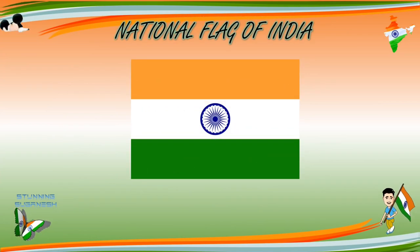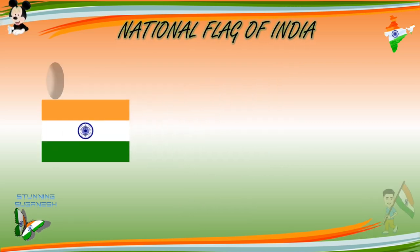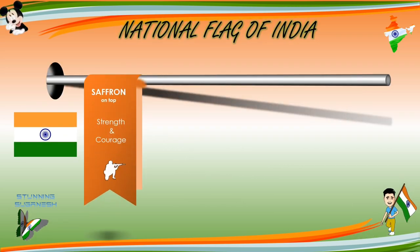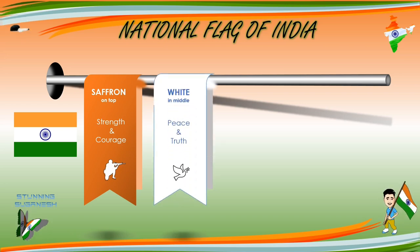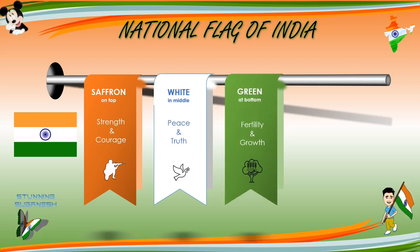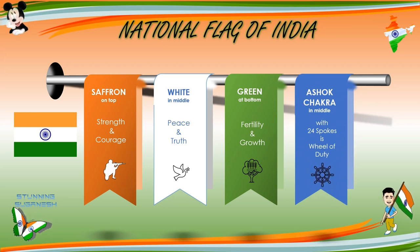National Flag of India — Tiranga. Saffron on top represents strength and courage. White in the middle represents peace and truth. Green at the bottom represents fertility and growth. The Ashoka Chakra in the middle with 24 spokes is the Wheel of Duty.